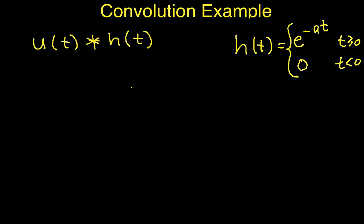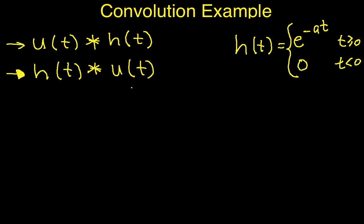We're going to compute it two different times. We're going to use the fact that the convolution integral is commutative, so we can also write it as h of t convolved with u of t. I'm going to start with this one because it makes things a little easier, although it won't be significantly different.